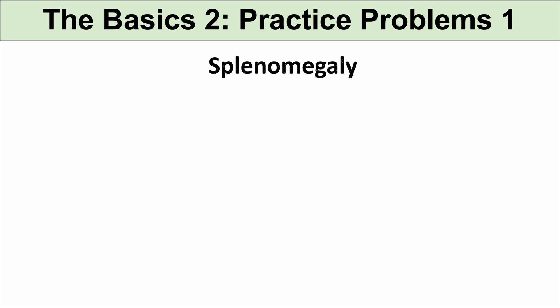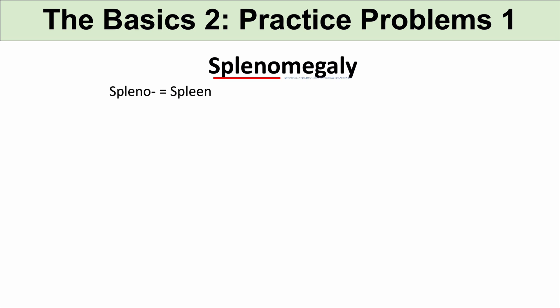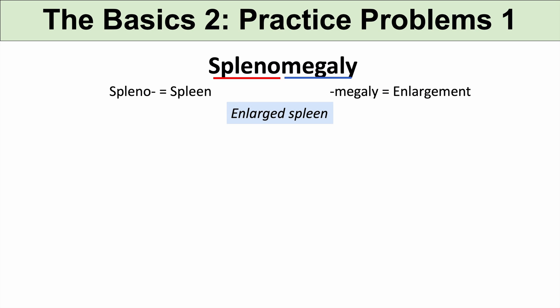The first practice problem is the word splenomegaly. Break it down into prefix and suffix. The prefix spleno means spleen. And megaly means enlarged or enlargement. So when we put this together, splenomegaly means an enlarged spleen.